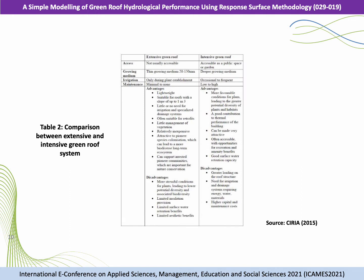Table 2 shows the comparison between extensive and intensive green roof systems. As you can see, the extensive and intensive systems have been differentiated by different categories such as access, growing medium, irrigation, and maintenance.